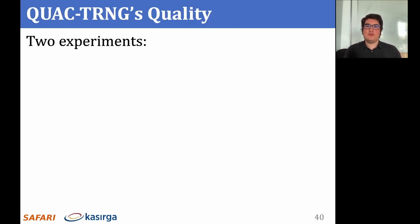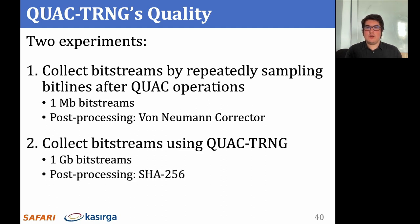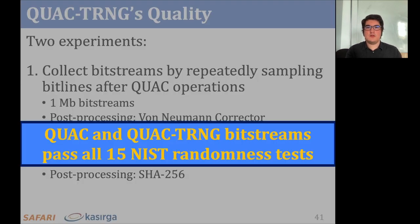We conduct two experiments to evaluate QuadTRNG's random number generation quality. First, we collect 1-megabit bitstreams from each bitline in every segment from multiple DRAM modules using QUAC. Second, we collect 1-gigabit QuadTRNG bitstreams using high-entropy DRAM segments from multiple DRAM modules. Our results show that bitstreams generated by both QUAC and QuadTRNG pass all 15 NIST tests. You can read the full paper for more details.